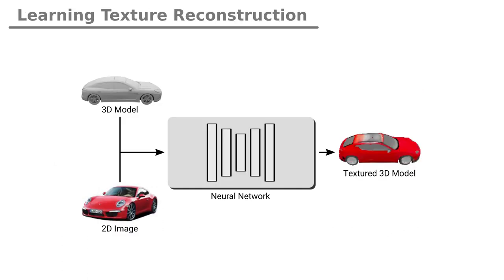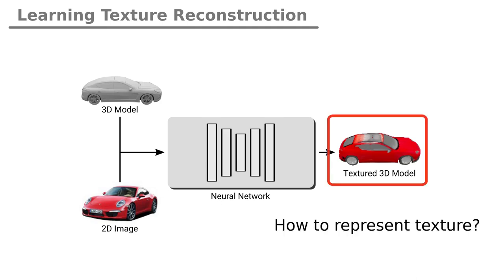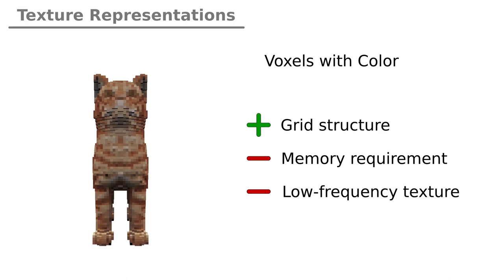We propose a novel method that can reconstruct texture from a single image and the corresponding 3D shape, and a generative model for novel textures. One of the major limitations of current methods results from the representation of the texture. Using colored voxels as representation, deep learning architectures are feasible on the 3D grid. However, due to high memory costs, methods are limited to low-resolution discretization and hence also to low-frequency texture.